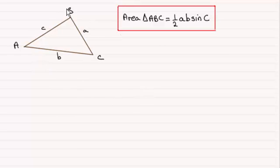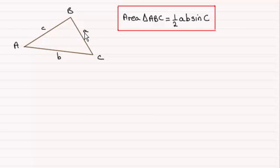Let's suppose we take a typical triangle where the angles are marked A, B, and C, and the opposite sides are little a, little b, and little c. What this is saying is that if you've got a triangle and you know two sides, let's say A and B, and the included angle — the one in between the two sides that you know, we call it C here — then the area of the triangle can be shown to be half the product of those two sides times the sine of the included angle.